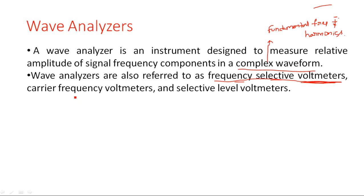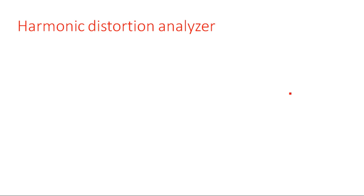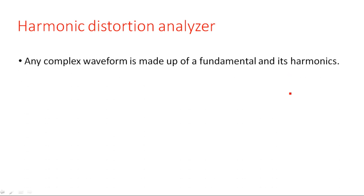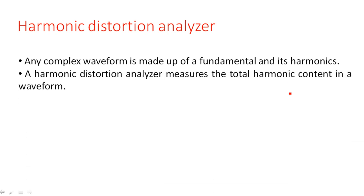A harmonic distortion analyzer works with a complex waveform. In such a waveform, along with the fundamental frequency component, several harmonic components are also present. A harmonic distortion analyzer measures the total amount of distortion present in the signal. Any complex waveform is made up of a fundamental and its harmonics.